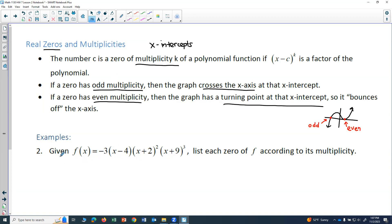Alright, so let's use that. Given f of x equals negative 3 times x minus 4 times x plus 2 quantity squared times x plus 9 quantity cubed, list each zero of f according to its multiplicity.